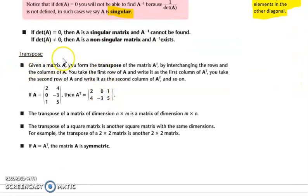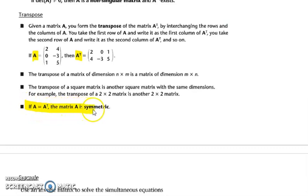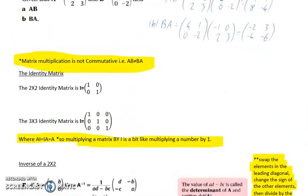Next is transpose. Transpose means take the rows and columns and switch them around. A with T means A transpose. The rows and columns just switch around. If A equals A transpose, then A is a symmetric matrix. The identity is a symmetric matrix because the elements are paired up off the leading diagonal, symmetrical about the leading diagonal.